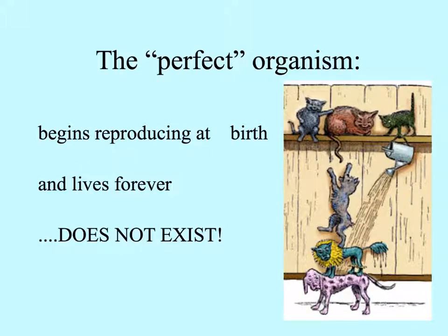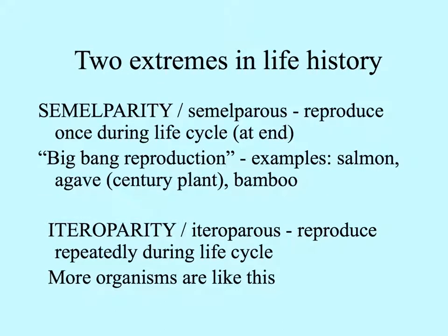In an idealized world, we could envision a perfect organism that would begin reproducing as soon as it's born and lives forever — that is the organism that could have the maximum reproduction. However, this kind of organism does not exist. There are two extremes in life histories: semelparity and iteroparity.